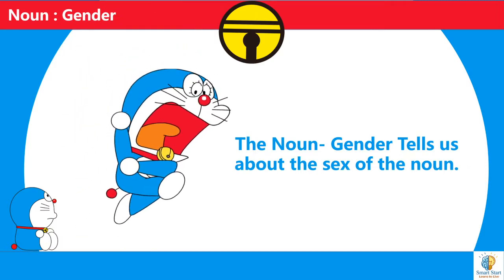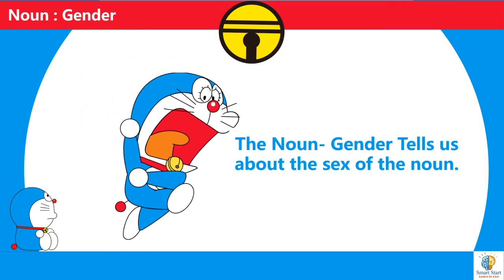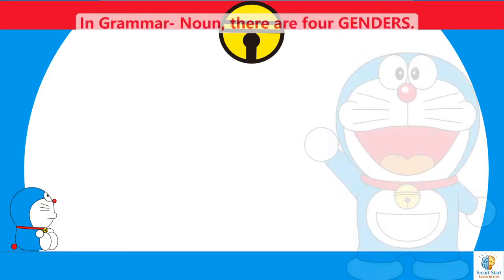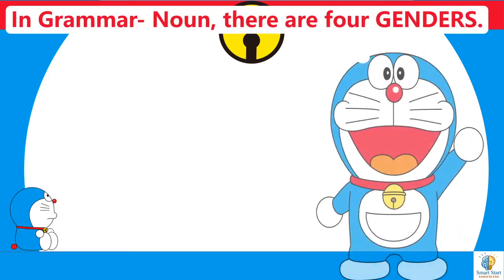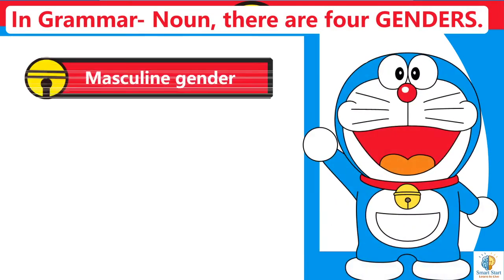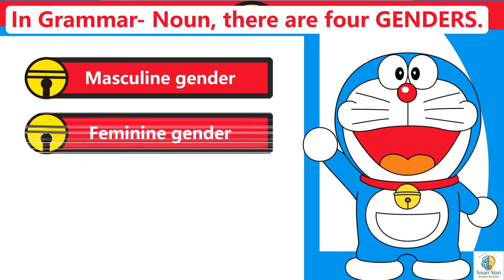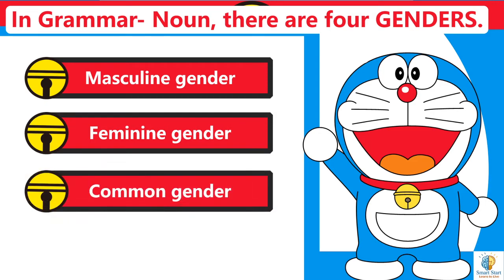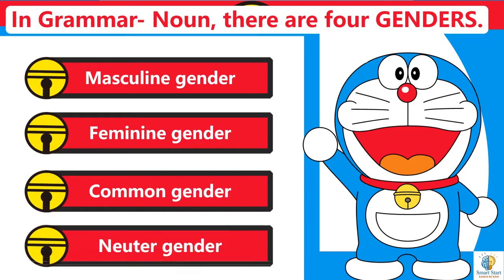The Noun Gender tells us about the sex of the noun. There are four kinds of gender: Masculine Gender, Feminine Gender, Common Gender, and Neuter Gender.